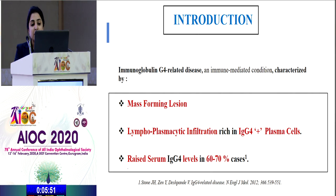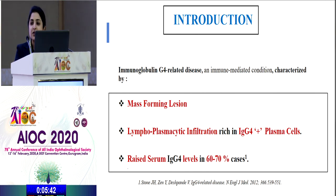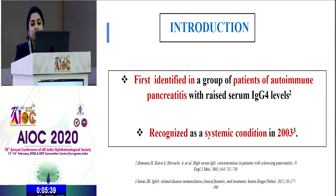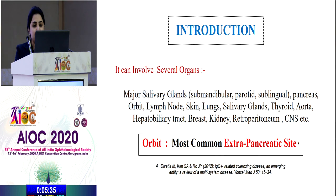IgG4 disease is an immune-mediated condition characterized by mass-forming lesion, lymphoplasmacytic infiltration rich in IgG4 cells, and raised serum IgG4 levels in 60-70% of cases. It was first identified in patients with autoimmune pancreatitis and recognized as a systemic condition in 2003. It can involve several organs, with the orbit being the most common extra-pancreatic site.